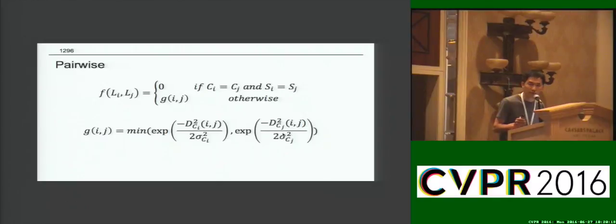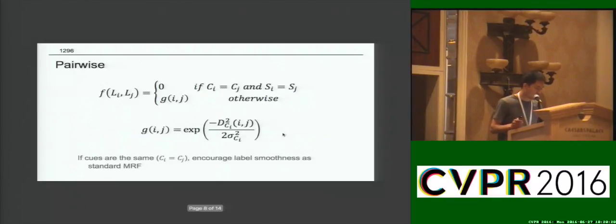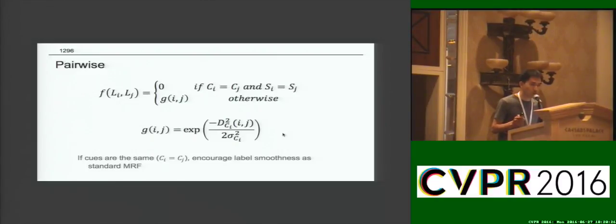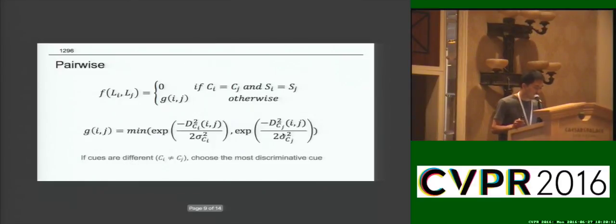When the cues are the same, it reduces to the standard single-cue pairwise term which encourages label smoothness. When the cues are different, we choose the smallest cost, which is essentially the most discriminative cue.